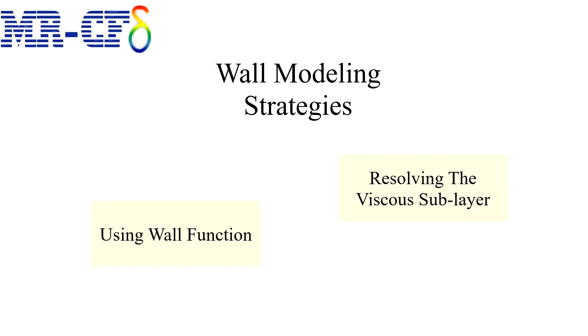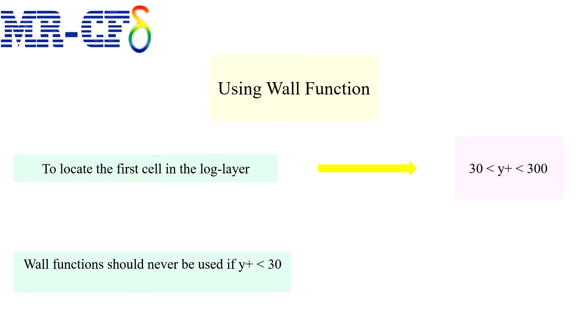The choice is between using wall functions and resolving the viscous sublayer. Wall functions utilize the predictable dimensionless boundary layer profile to allow conditions at the wall to be determined when the center of the wall adjacent mesh cell is located in the log layer.